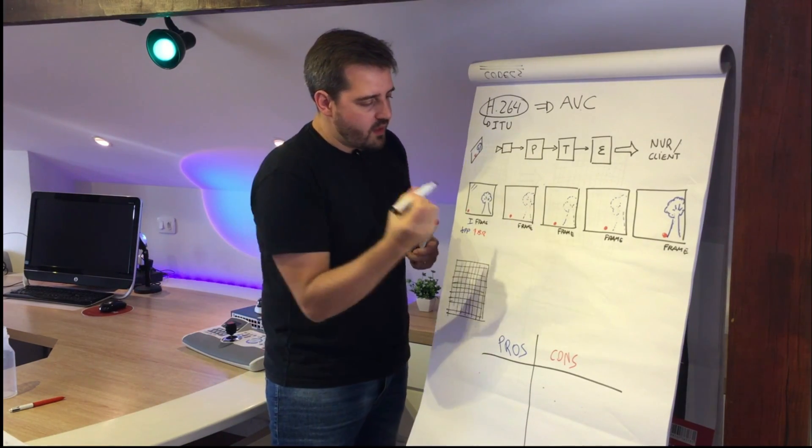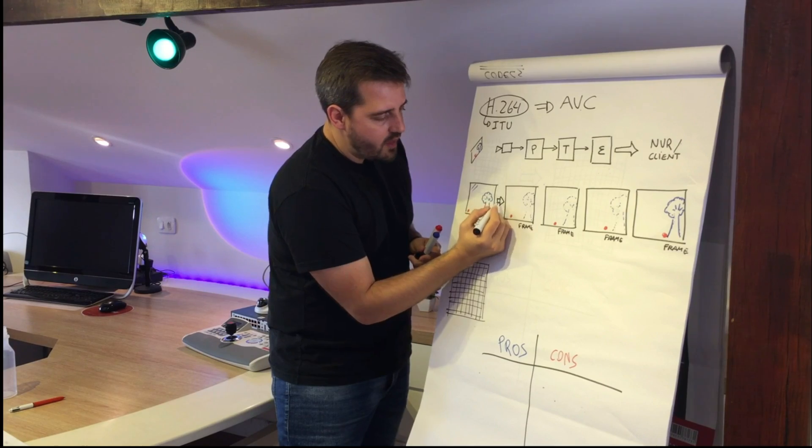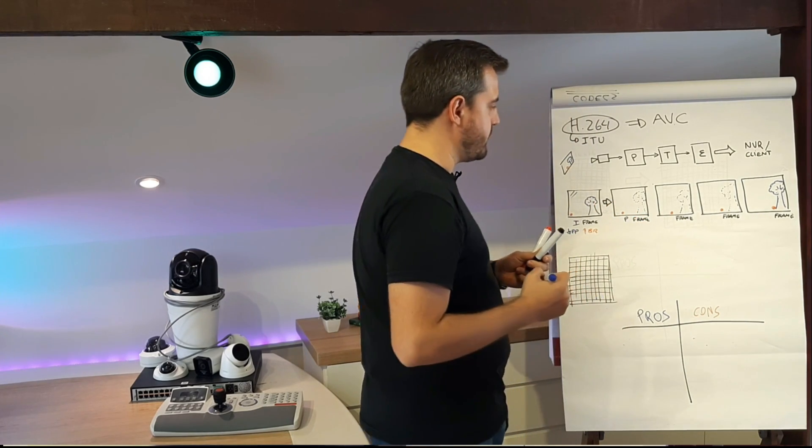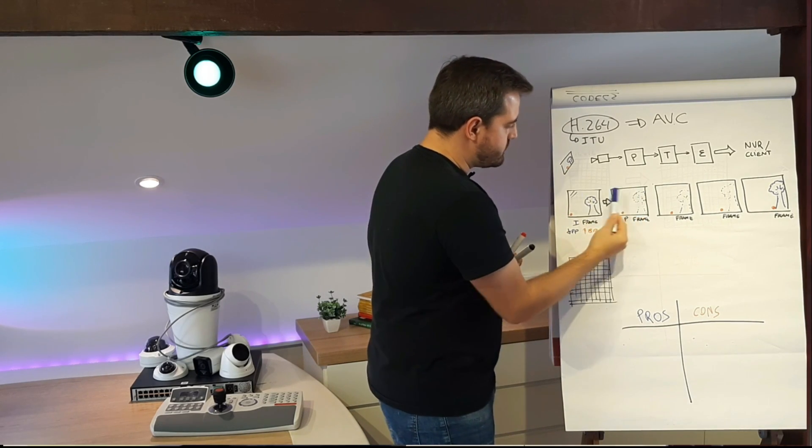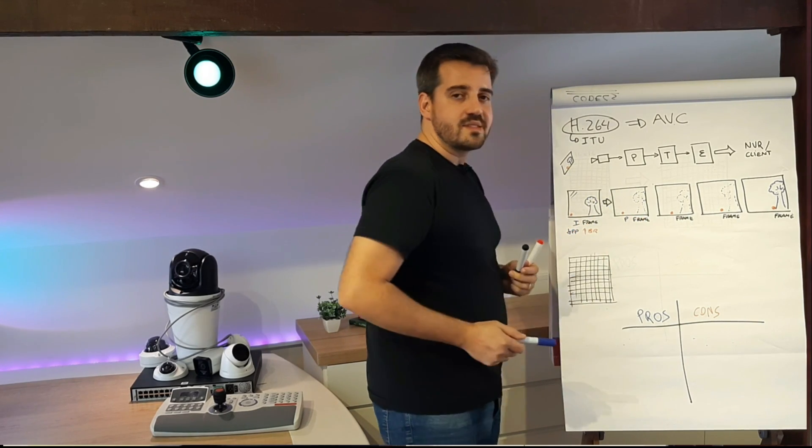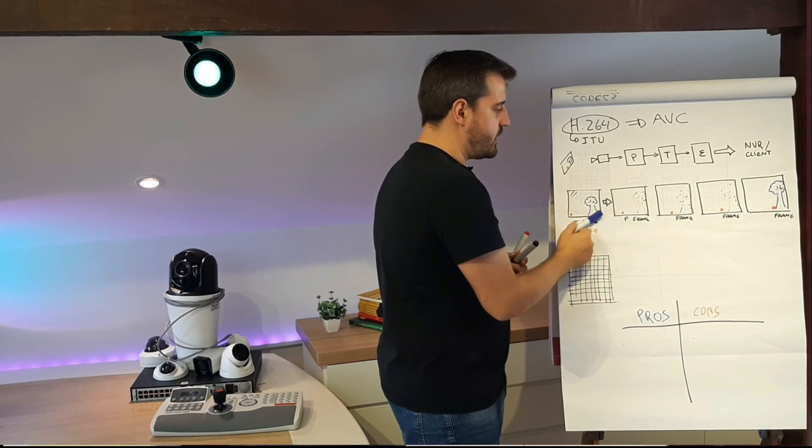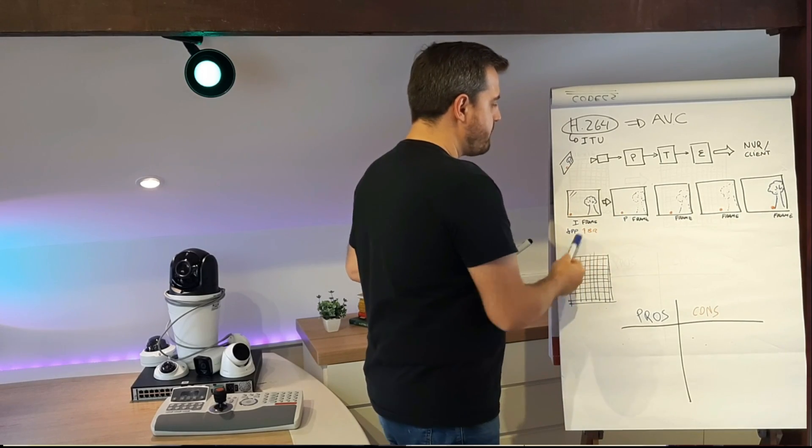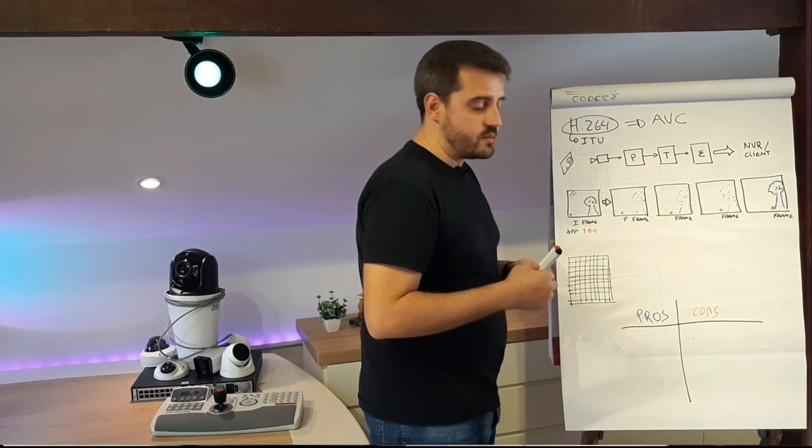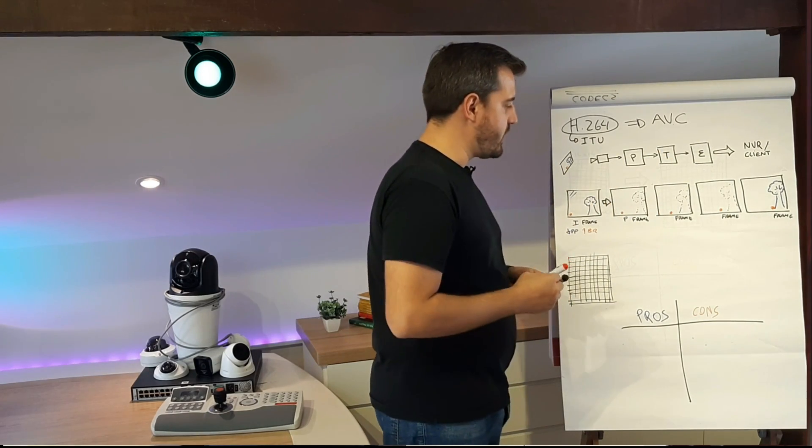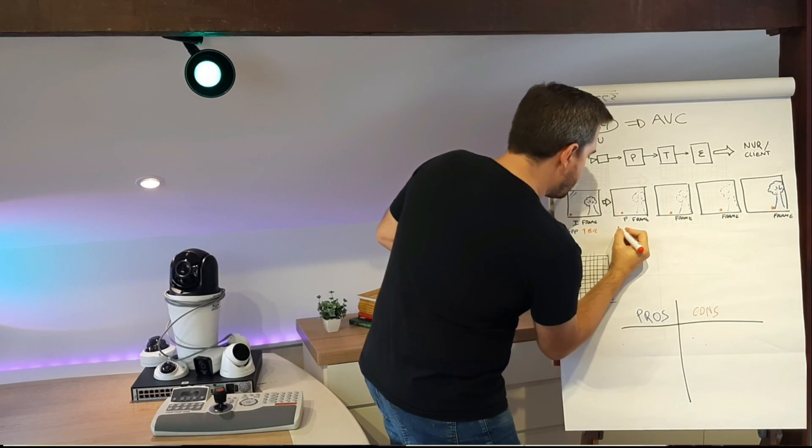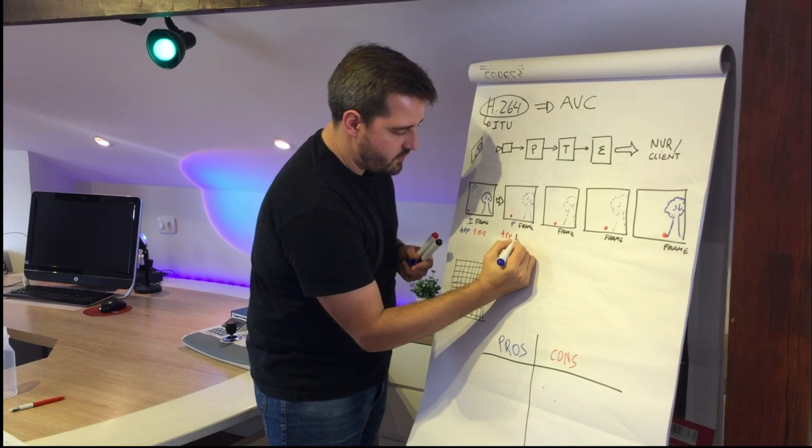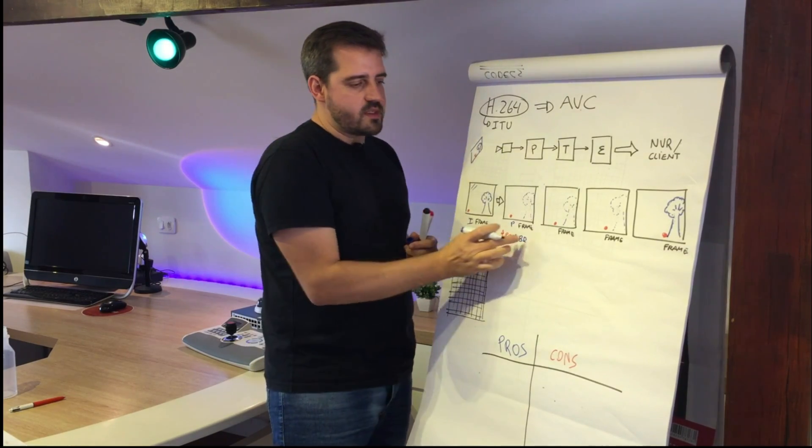But after that, the camera will start to compare the I-frame with the next frame, which is called prediction frame, the P-frame. It will start to compare the image and see, okay, the background is the same, it's static, so it will not send this data to the NVR or client, only the difference. So only the ball in this case will be sent as a P-frame. This will reduce a lot the data that we will transfer to the NVR and client, and this will increase the processing power needed and decrease the bitrate.